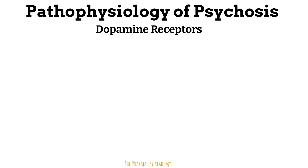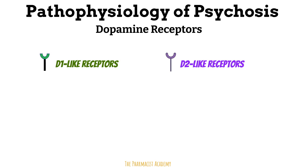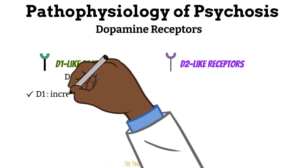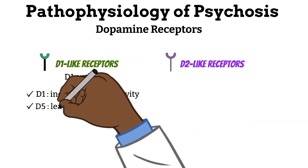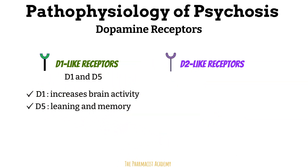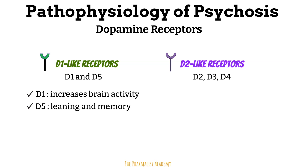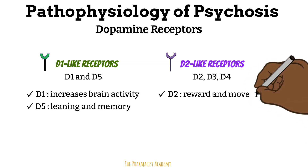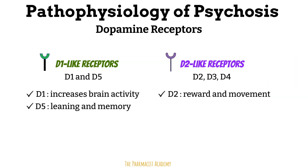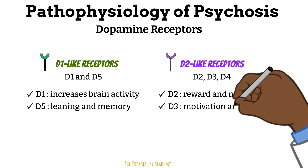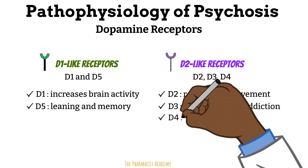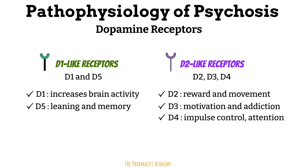There are five distinct types of dopamine receptors categorized into two families. The first family is D1-like receptors, consisting of D1 and D5. D1 is responsible for increasing brain activity or excitation, while D5 is more involved in cognitive functions like learning and memory. The second family is D2-like receptors, consisting of D2, D3, and D4. D2 is heavily involved in reward processing and movement regulation. D3 is associated with motivation, reward, and drug addiction. D4 is involved in impulse control, attention, and personality traits.